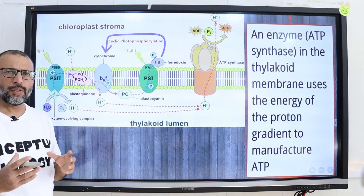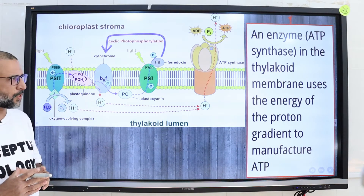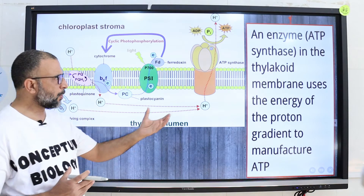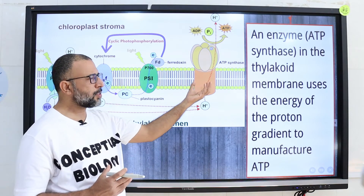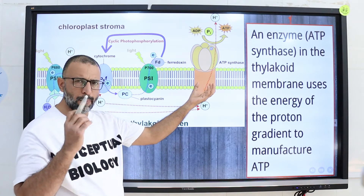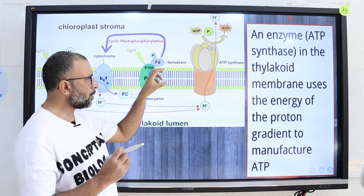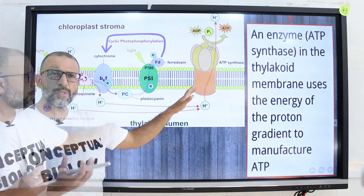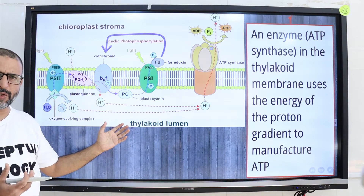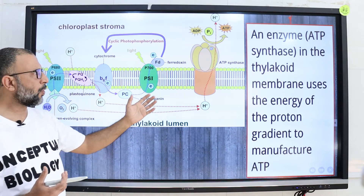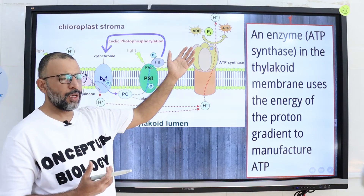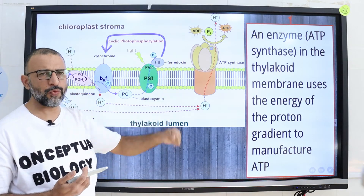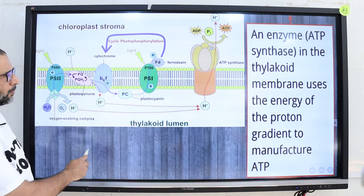The enzyme ATP synthase, embedded in the thylakoid membrane, uses the energy of the proton gradient to manufacture adenosine triphosphate.